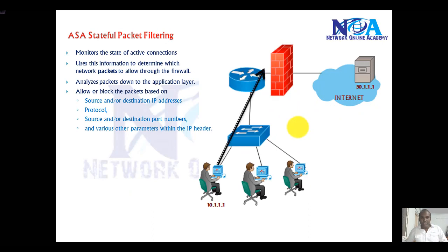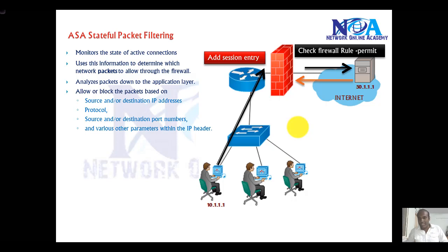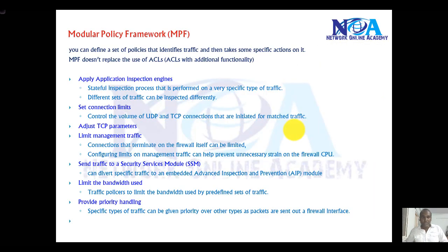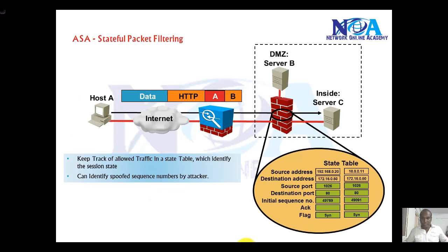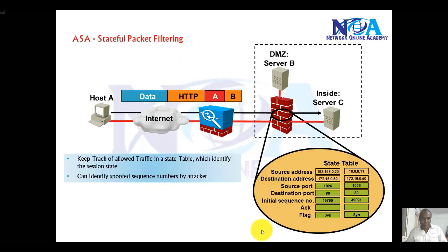The ASA firewall allows the traffic to pass through and writes it down in the state session table. When return traffic comes back, it checks whether it is part of an existing session and based on that allows it. By default, the ASA will inspect TCP and UDP traffic.